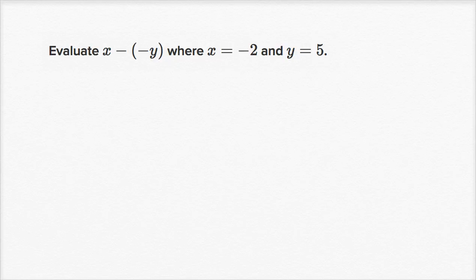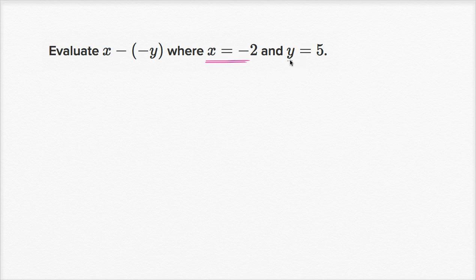Let's give ourselves some practice substituting positive and negative values for variables. We're told to evaluate x minus negative y, where x is equal to negative two, and y is equal to five. So everywhere we see an x, we replace with a negative two; everywhere we see a y, we replace with a five.